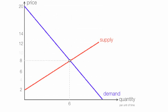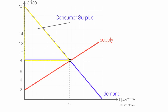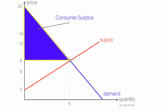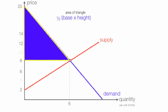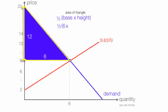Where did I get 8 and 6? I just made it up for this example. The consumer surplus is the area above price and below the demand curve, or the area outlined there in the blue triangle. Consumer surplus is the area of the triangle which is one half base times height. The base is 6, so we have one half times 6 times the height, which is 20 minus 8 or 12. 6 times 12 is 72, and one half times 72 is 36. Consumer surplus is 36.